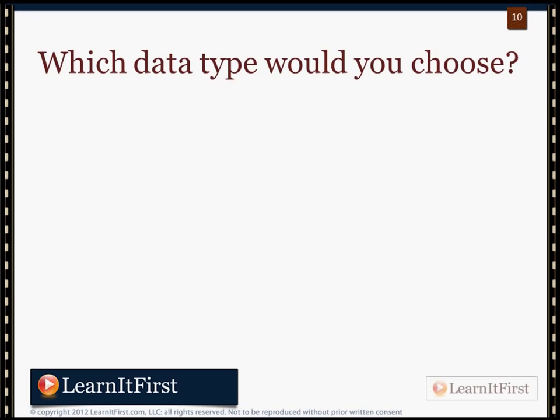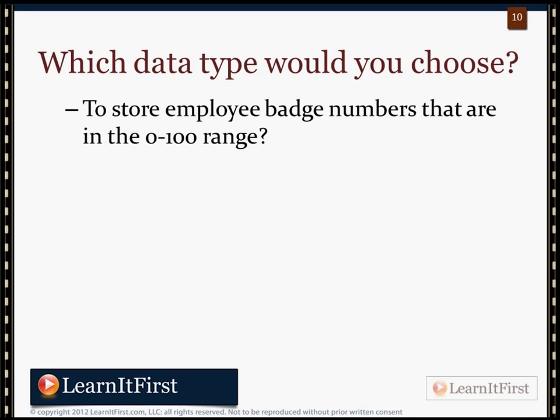Let's go through a couple of scenarios about the proper choice of data types. Let's say we're asked to store employee badge numbers for a really small company — 16 employees today, a mom-and-pop shop, storing badge numbers in the range 0 to 100. What data type should we choose — bit, tinyint, smallint, int, or bigint? The most efficient choice would be tinyint, which gives us the 0 to 255 range. We're down to one byte per row — that's the most efficient way.